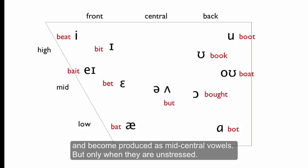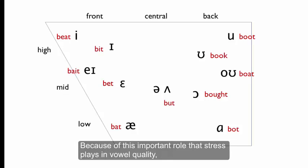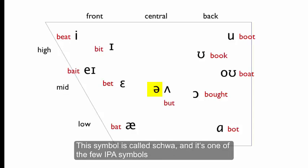But only when they're unstressed. Because of this important role that stress plays in vowel quality, we use a separate symbol for unstressed vowels that sound like schwa. This symbol is called schwa, and it's one of the few IPA symbols that many people outside of phonetics will know.